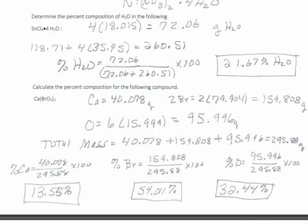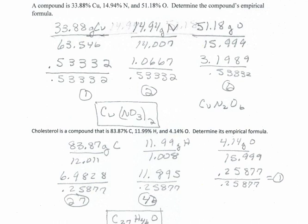Now empirical and molecular formulas. A compound is 33.88% copper, 14.94% nitrogen, and 51.18% oxygen. With a 100g sample size, those percents become grams. Divide each by their atomic masses from the periodic table to get moles: 33.88 ÷ Cu, 14.94 ÷ N, 51.18 ÷ O. Take the least moles and divide into all the larger: divide by itself = 1; 1.0667 ÷ least ≈ 2; 3.1989 ÷ least ≈ 6. Formula is CuN₂O₆, which is copper(II) nitrate — you can recognize NO₃ as the nitrate polyatomic ion.